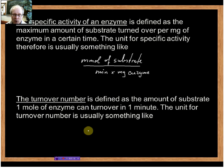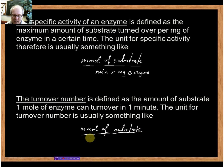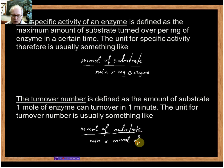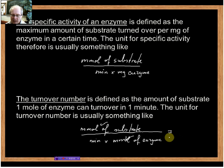So if we take the unit of our specific activity, we would have millimole of substrate per minute, and instead of milligram of enzyme I say times the amount of enzyme — so for example millimole of enzyme. What we see is that the millimole in the numerator and the millimole in the denominator cancel out, and what I'm left with is time in the denominator. So the unit for the turnover number would be minute to the minus one.